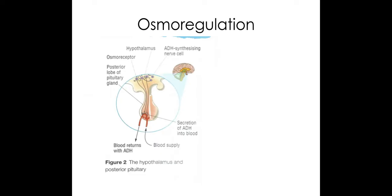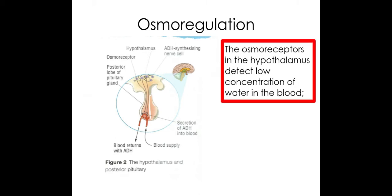So osmoregulation, as mentioned just then, we have our osmoreceptors which are found within the hypothalamus in the brain. Now these osmoreceptors detect a low concentration of water within the blood and what happens is it would send a signal down special neurosecretory cells that link up the hypothalamus to the posterior pituitary gland. These neurosecretory cells are like specialized adapted nerve cells which also allow the transmission of hormones through them, so ADH is passed along these neurosecretory cells to the posterior pituitary gland where the ADH can be stored until it is needed to be released.